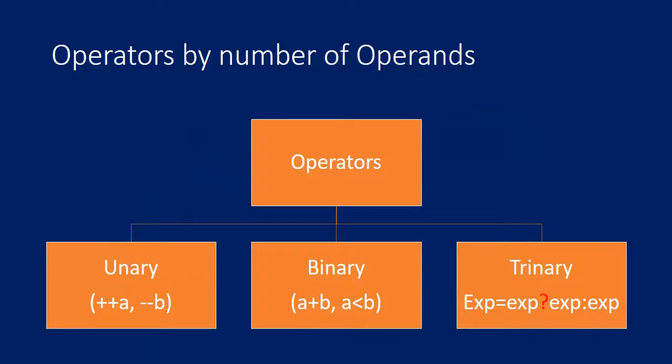Based on the number of operands an operator handles or needs, there are three kinds of operators: unary operators, binary operators, and trinary operators. In unary operators there is only one operand. In binary operators there are two operands. In trinary operators we need three operands or three expressions.